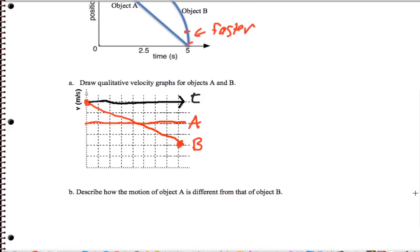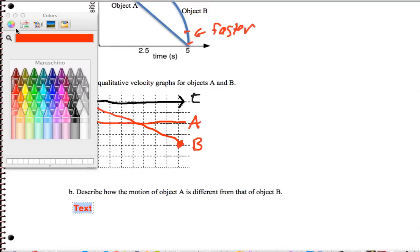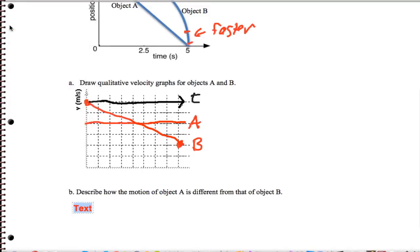Now if you want to describe how the motion of object A is different than object B, we really need to get clear on describing the motion of both objects. And to do that, I'm going to actually describe how each object moves. So object A and B start at the same position and end at the same position.